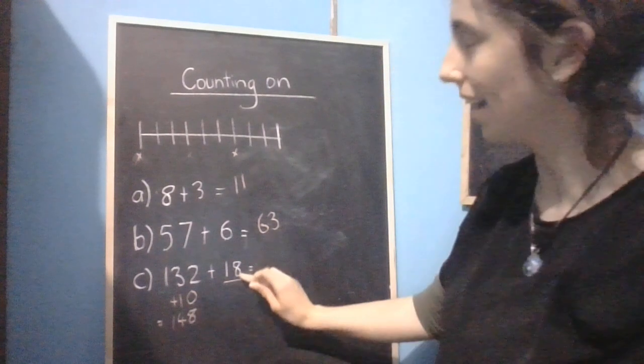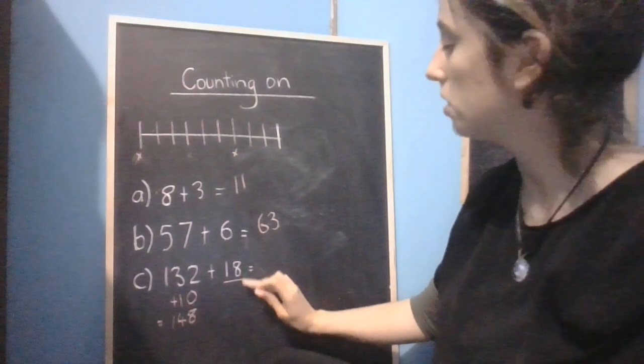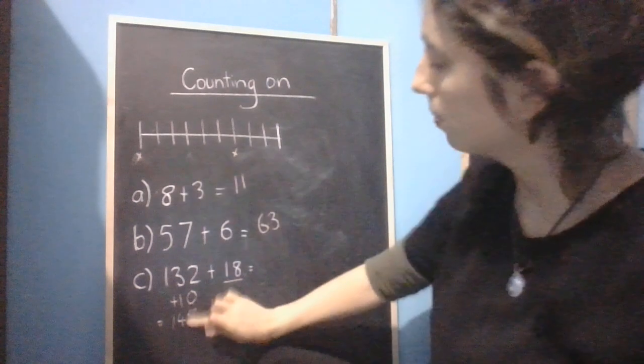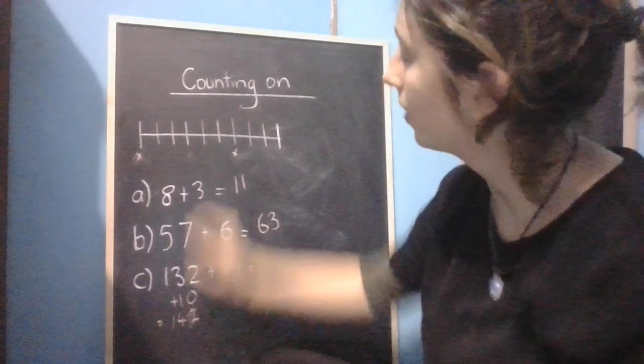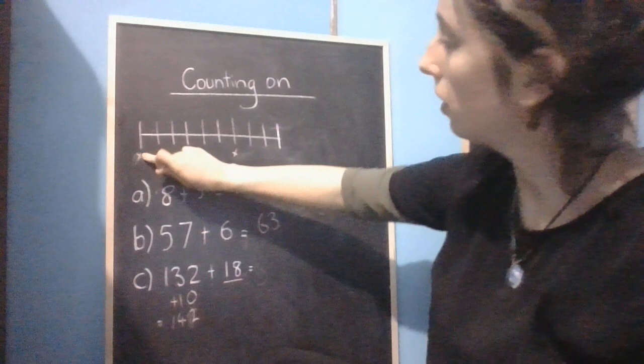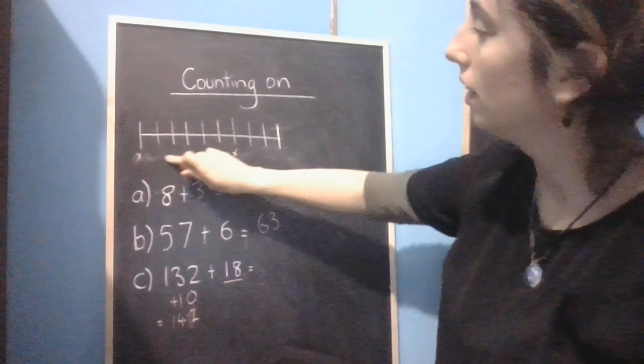And then we can just count on using the same strategy using the 8. So we go 142 and then we go 8 times: 143, 144,